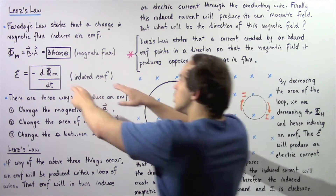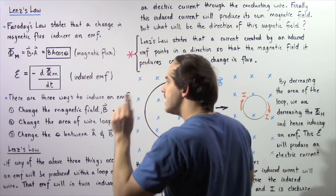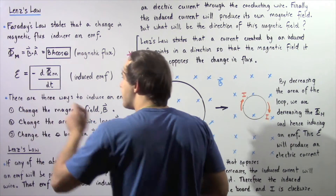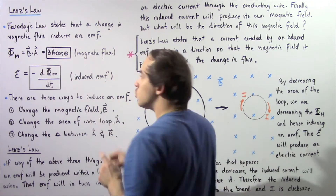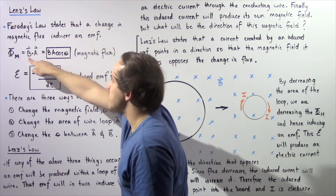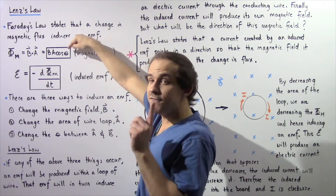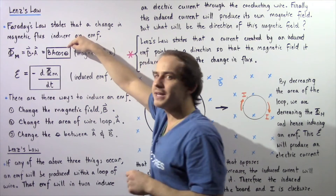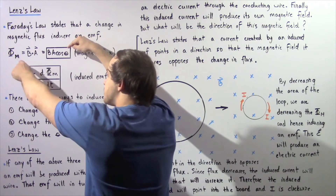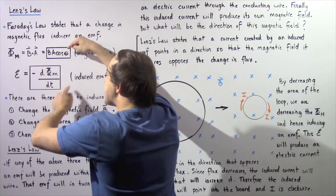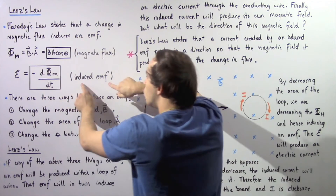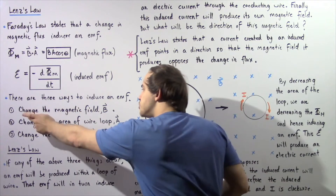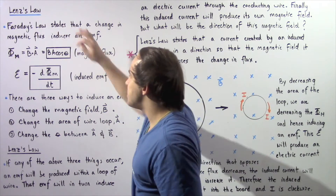From this equation we see that there are three different ways in which we can induce an EMF. Let's begin with way number one. If we keep our area constant and the angle between these two vectors also constant, then if we increase our B, our magnetic field, we increase our flux; if we decrease our B, we decrease our magnetic flux. In either case, we end up changing our magnetic flux, and by Faraday's Law that induces an EMF. So number one, we can induce an EMF by changing our magnetic field B while keeping A and the angle constant.